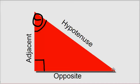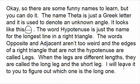If theta is on the other end of the triangle, then what was the adjacent side now becomes the opposite side, and what was the opposite becomes the adjacent. The hypotenuse never changes — it's always the hypotenuse and always opposite the right angle. The edges of a right triangle that are not the hypotenuse are called legs. When the legs are different lengths, they are called the long leg and the short leg.